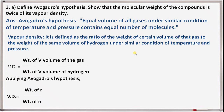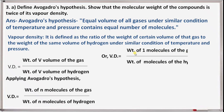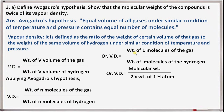Vapor density equals the weight of N molecules of the gas divided by the weight of N molecules of hydrogen, or VD equals the weight of one molecule of the gas divided by the weight of one molecule of hydrogen, or VD equals molecular weight divided by 2 (since hydrogen is diatomic), therefore molecular weight equals VD multiplied by 2.